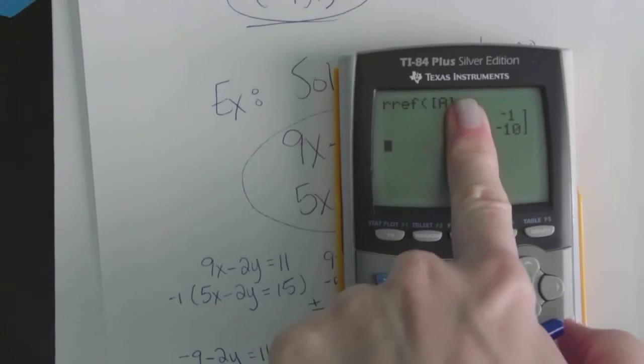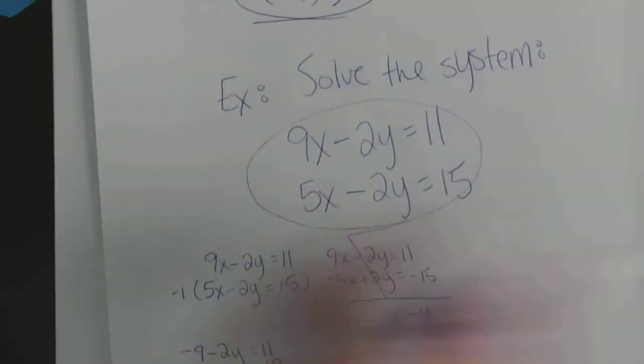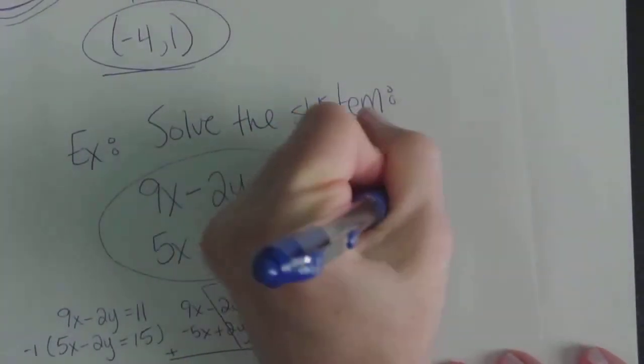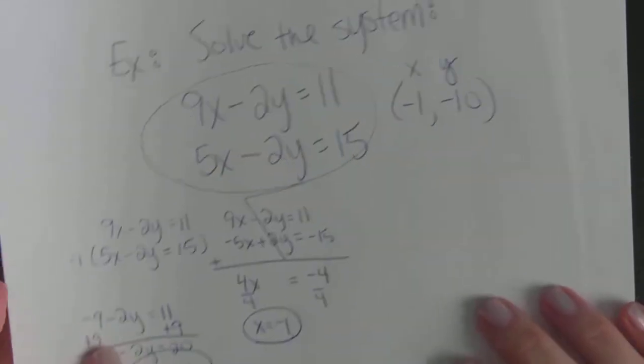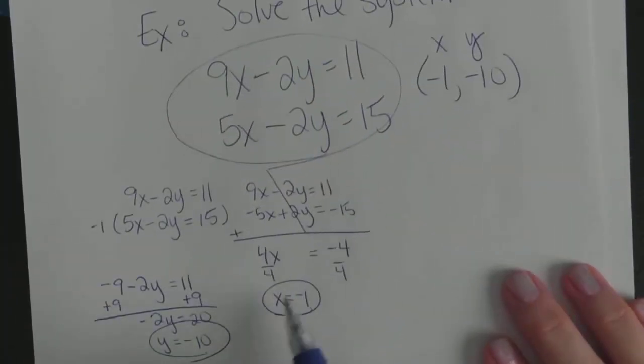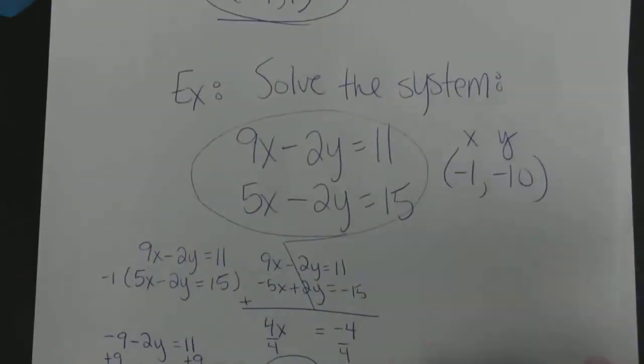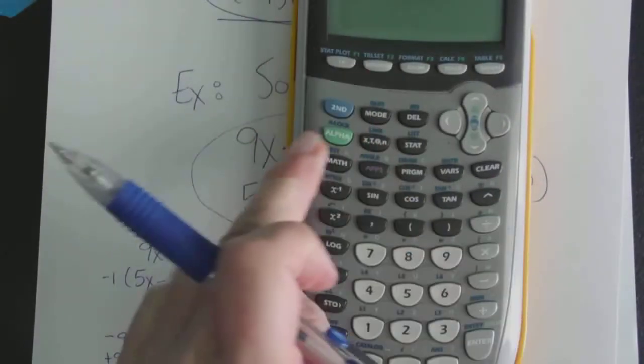You check. Do I have a 1, a 0, a 0, and a 1? Yes, I do. That means the answer lies behind it. Negative 1, negative 10. Negative 1, negative 10. That's my X and my Y. And look, by hand, same answer.